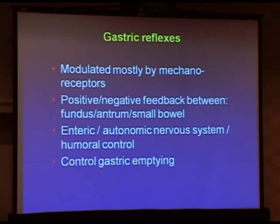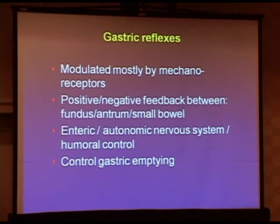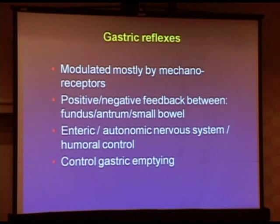Under normal conditions, these various segments talk to one another — they coordinate each other's activity — and they do that primarily by way of gastric reflexes, which are modulated by mechanoreceptors: nerve endings that sense stretch or contractions. There is positive and negative feedback, meaning one segment can promote or inhibit another. This depends on nerves that come from outside as well as nerves within the gut, and under normal conditions all of this ensures the stomach pumps well and gets food out on time.